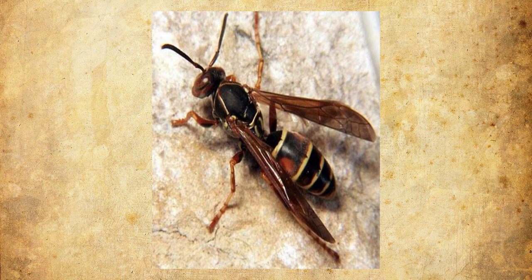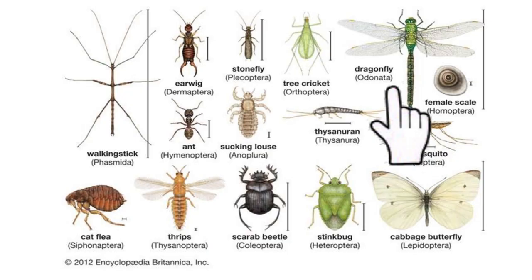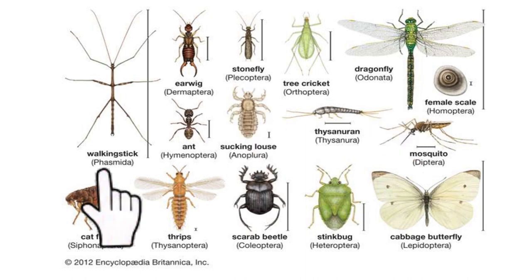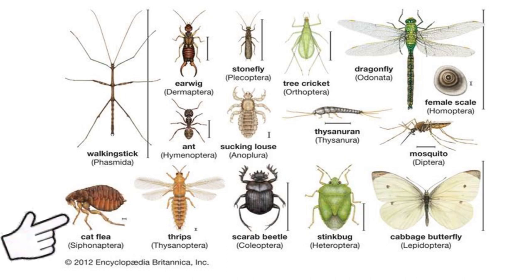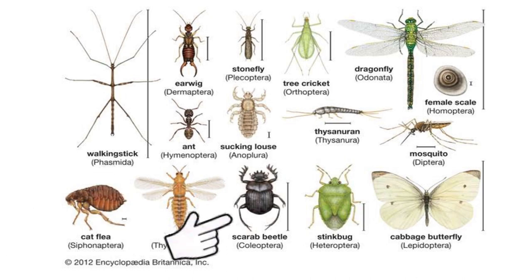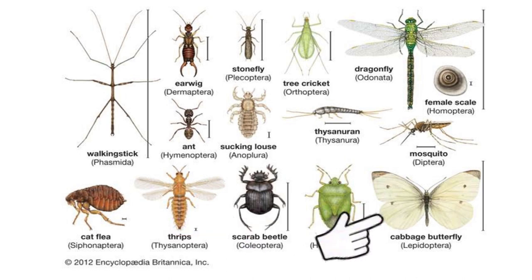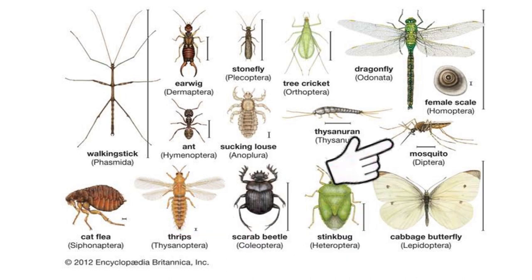Here we have a diagram showing a wasp or an ant. Here we also have a dragonfly, stonefly, walking stick, cat flea, beetles, stink bug, cabbage butterflies, and mosquitoes. All of these are arthropods.